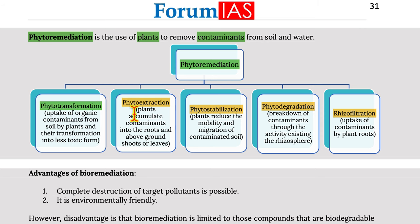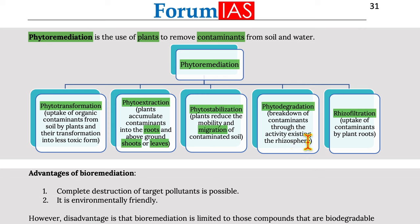Phytoremediation is the use of plants to remove contaminants from soil and water. It includes: phytotransformation — uptake of organic contaminants by plants and their transformation into less toxic forms; phytoextraction — plant accumulation of contaminants into roots and above-ground shoots; phytostabilization — plants reducing the mobility and migration of contaminated soil; phytodegradation — breakdown of contaminants through activity in the rhizosphere; and rhizofiltration — uptake of contaminants by plant roots.